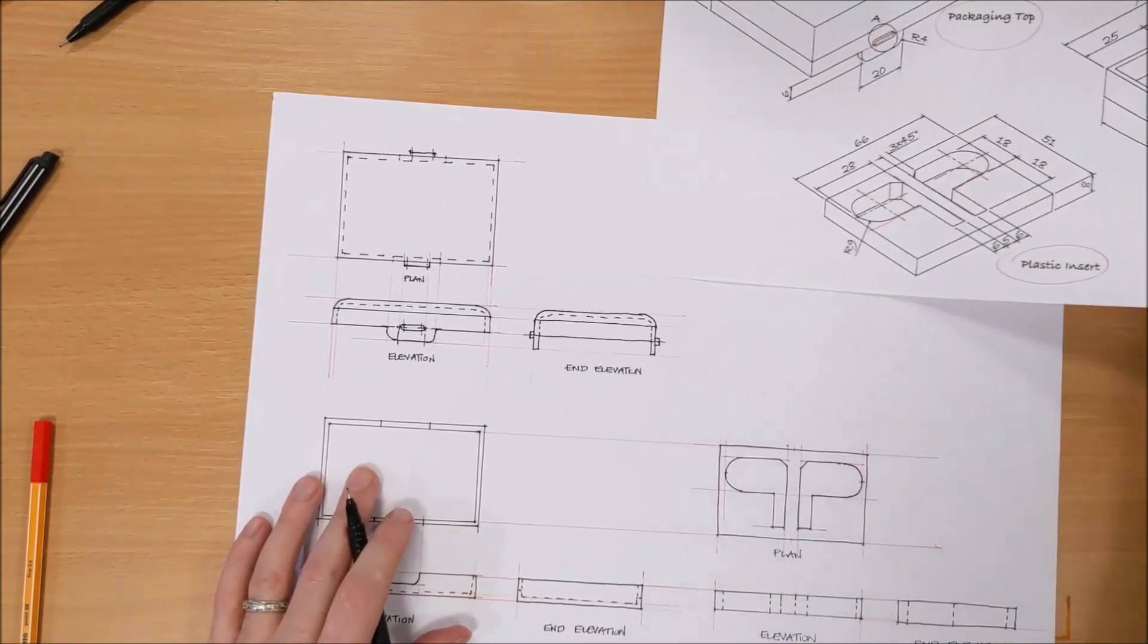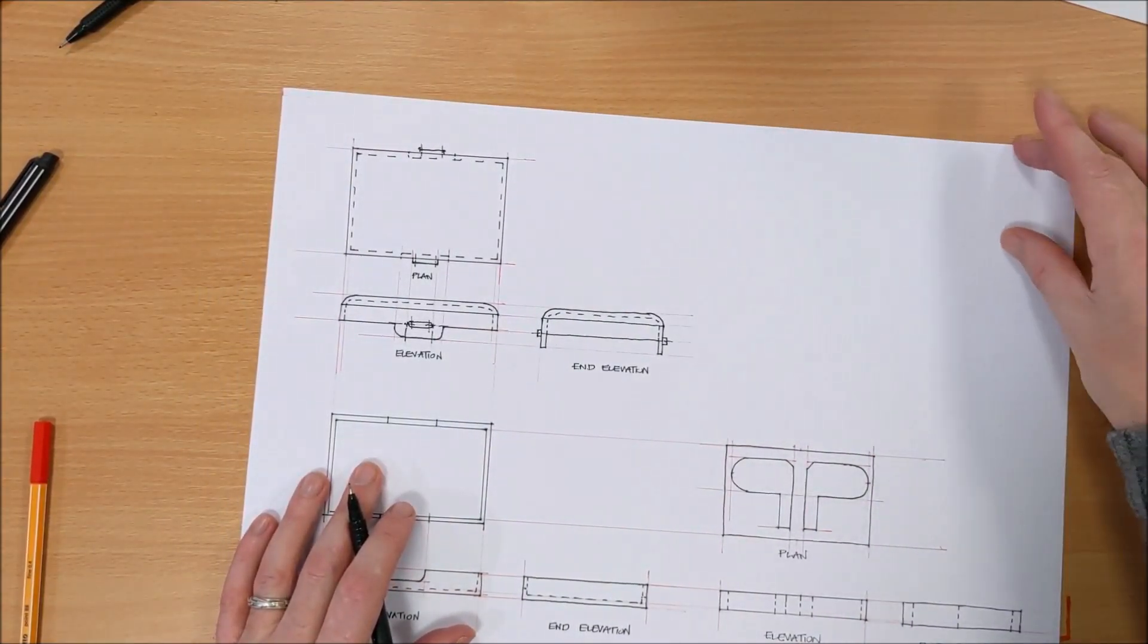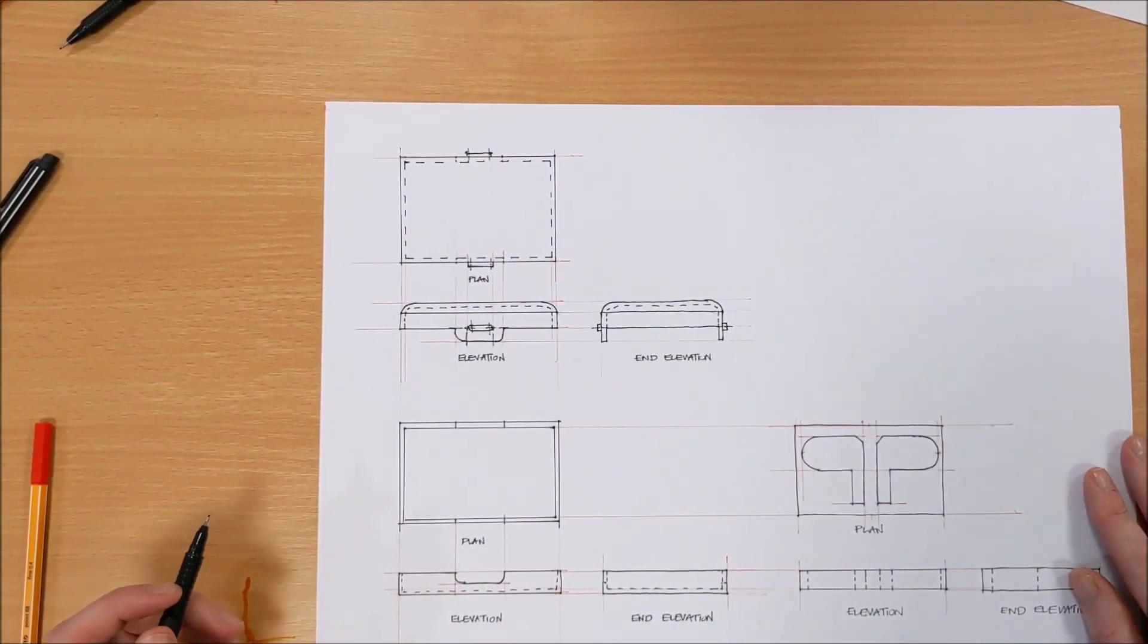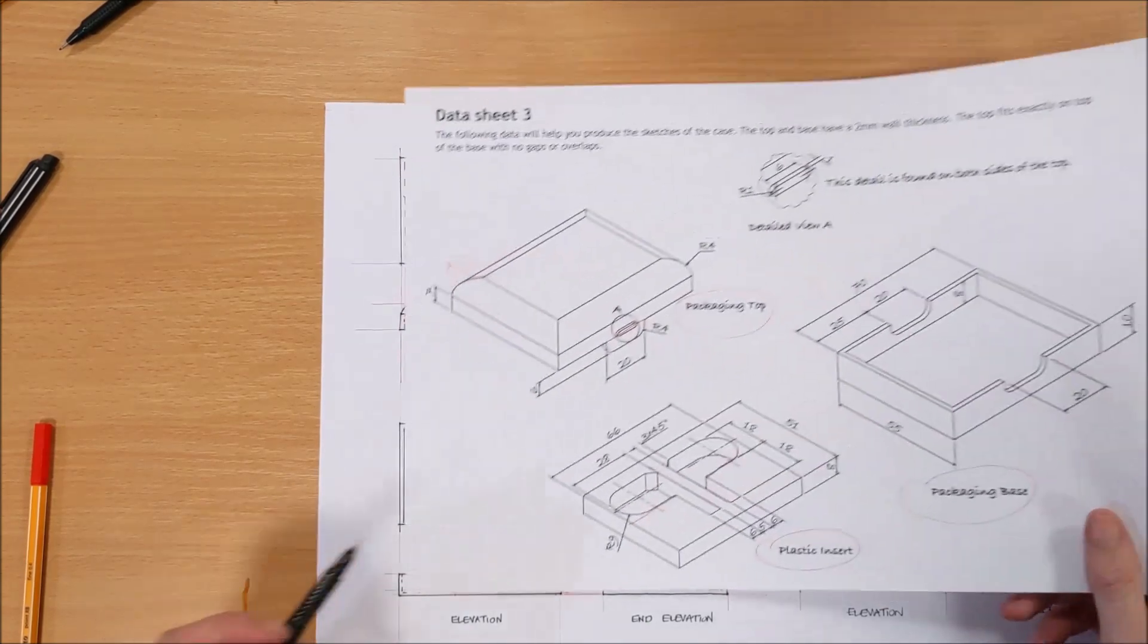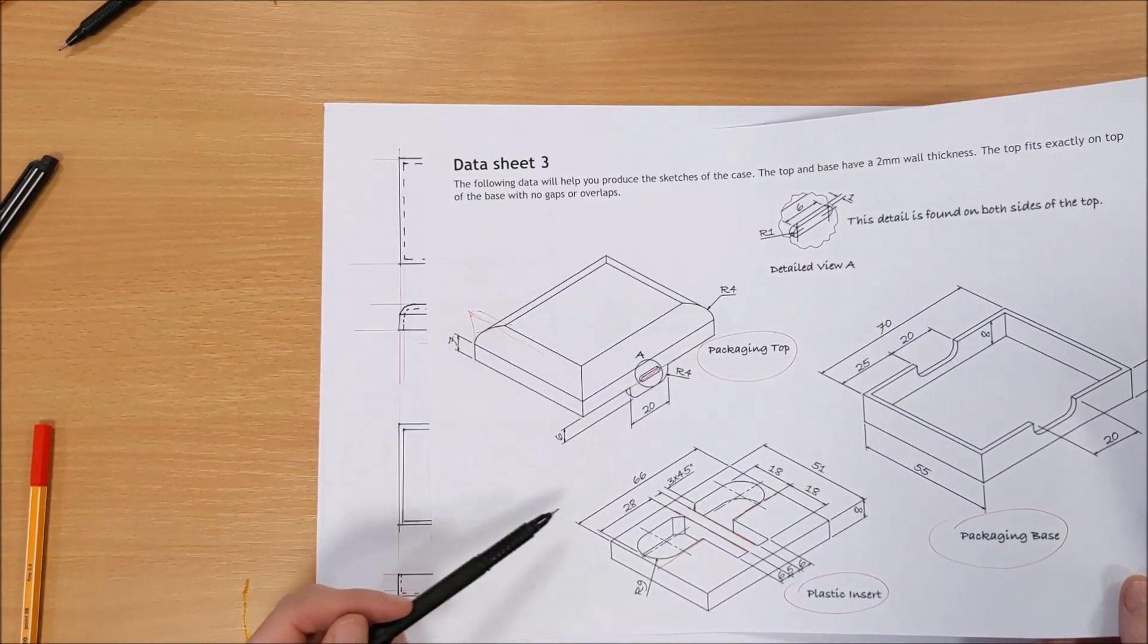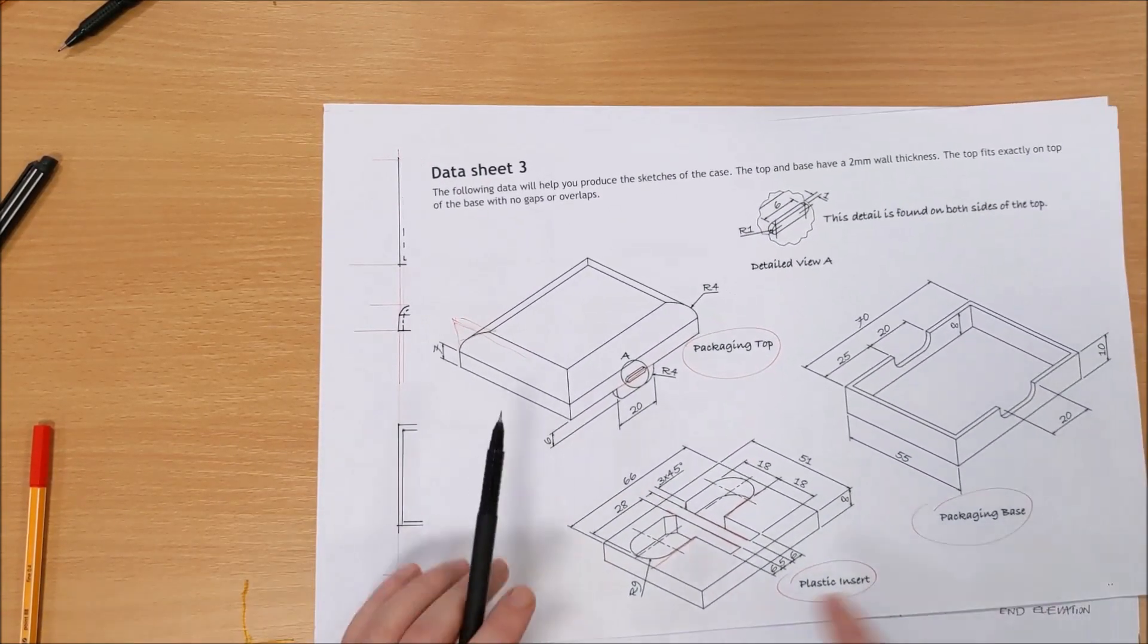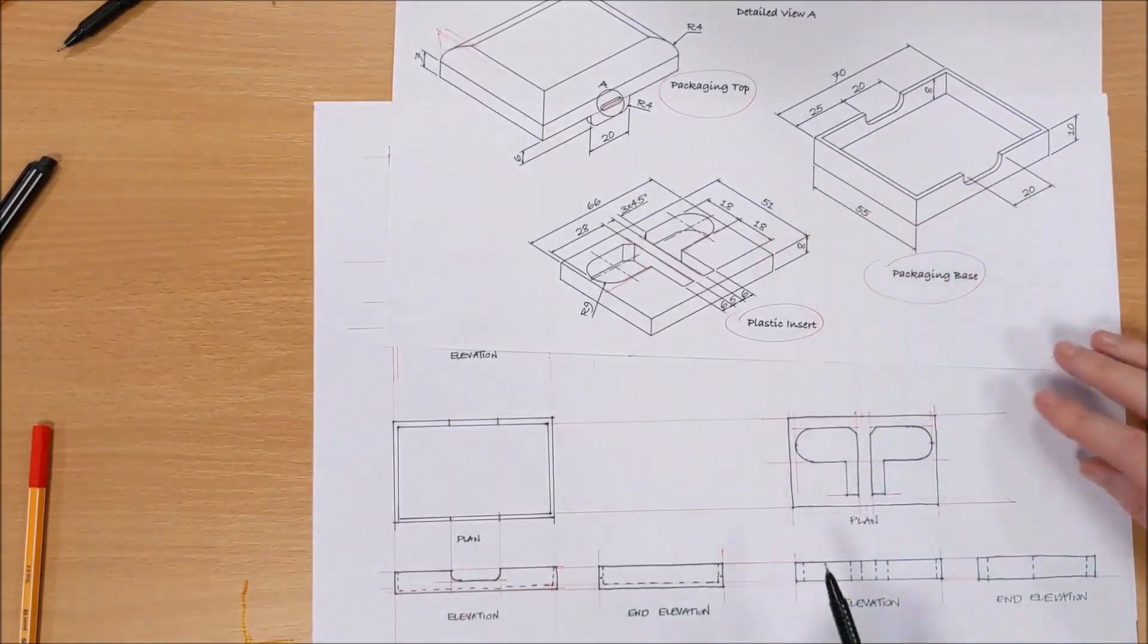Next stage is adding the dimensions and a title block. There's a good space for the title block, so I'll leave up there for the title block. Dimension, how am I going to know what dimensions to put on and where to put them? Well you've been given a drawing, so as you add a dimension, tick it off or score it off on the drawing. So let's start with the complicated part.